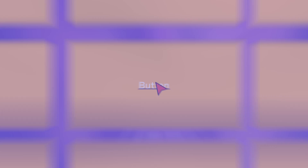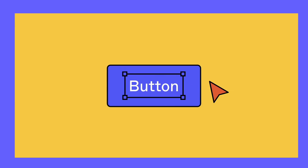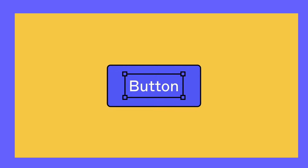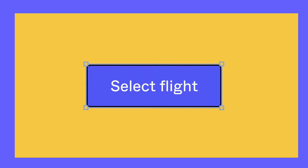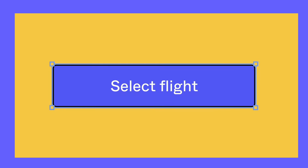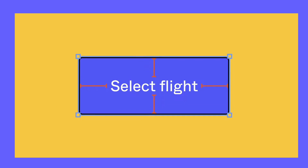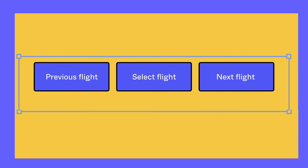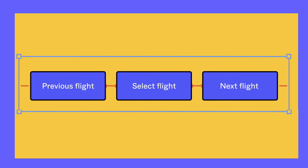An auto layout is a property we put on a frame to tell that frame's children how they should act. If the frame is the parent and any element inside of it is its child, then auto layout basically tells all the children how they should act — how much spacing they should have between one another, how much padding they should leave between them and their parent frame. What happens when a new child is born? Do we squish to accommodate for it? Do we make room in the next row, or next to us, or above or below us? So that's just the basics of it. Let's jump into the file and play around with this.